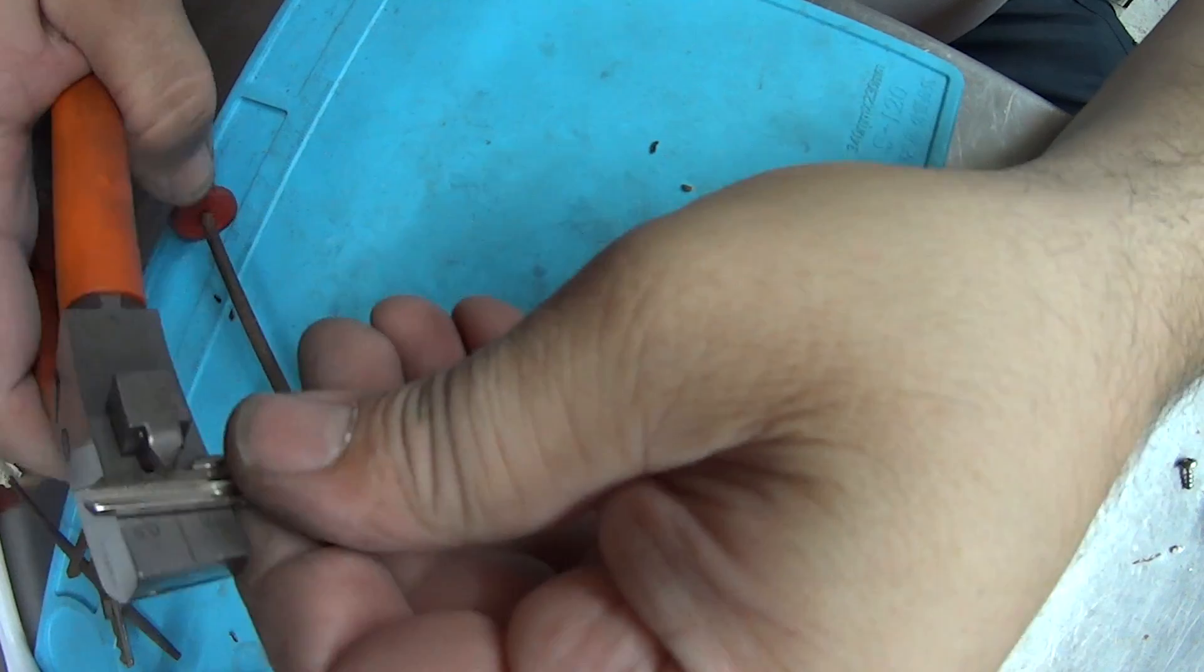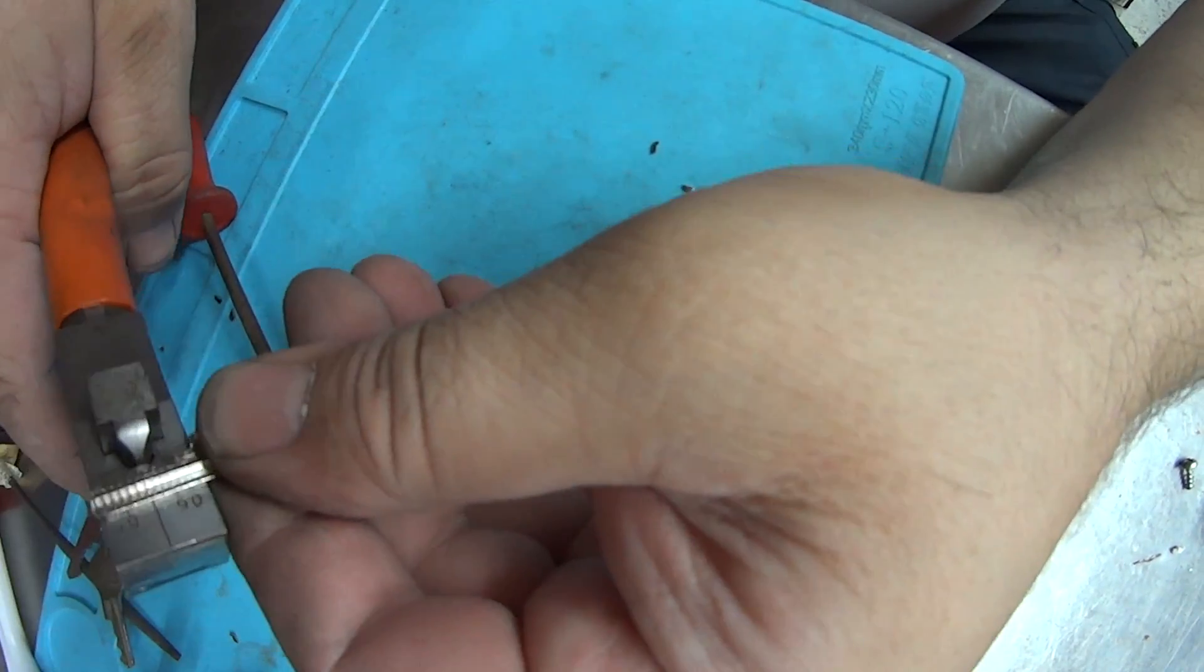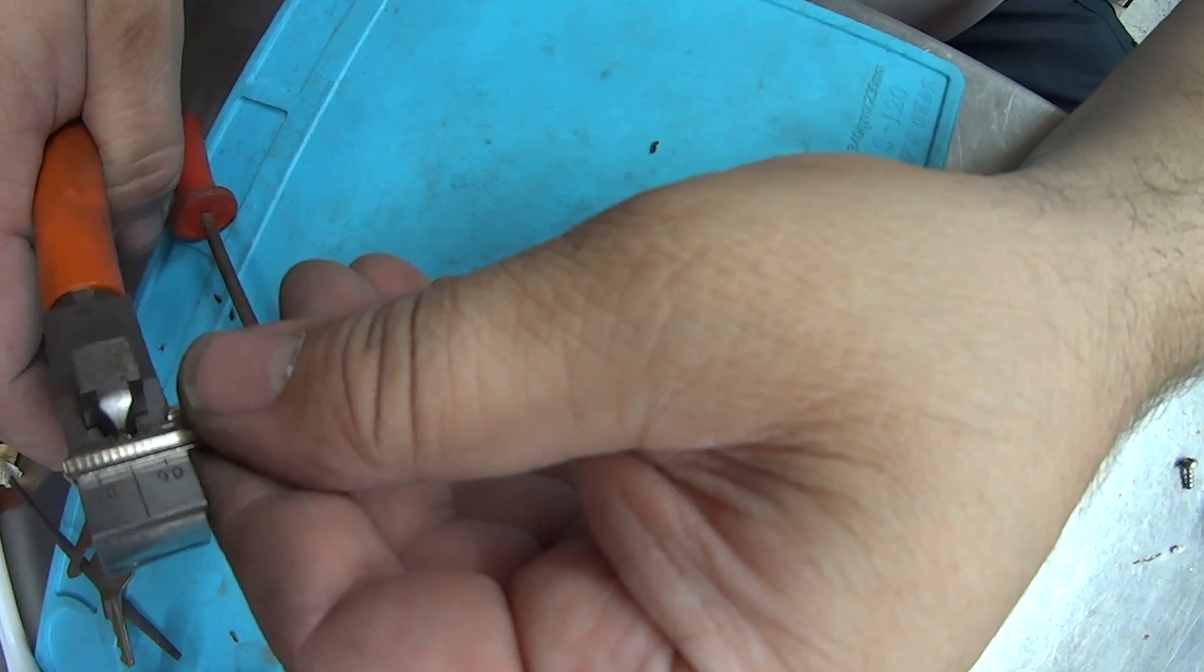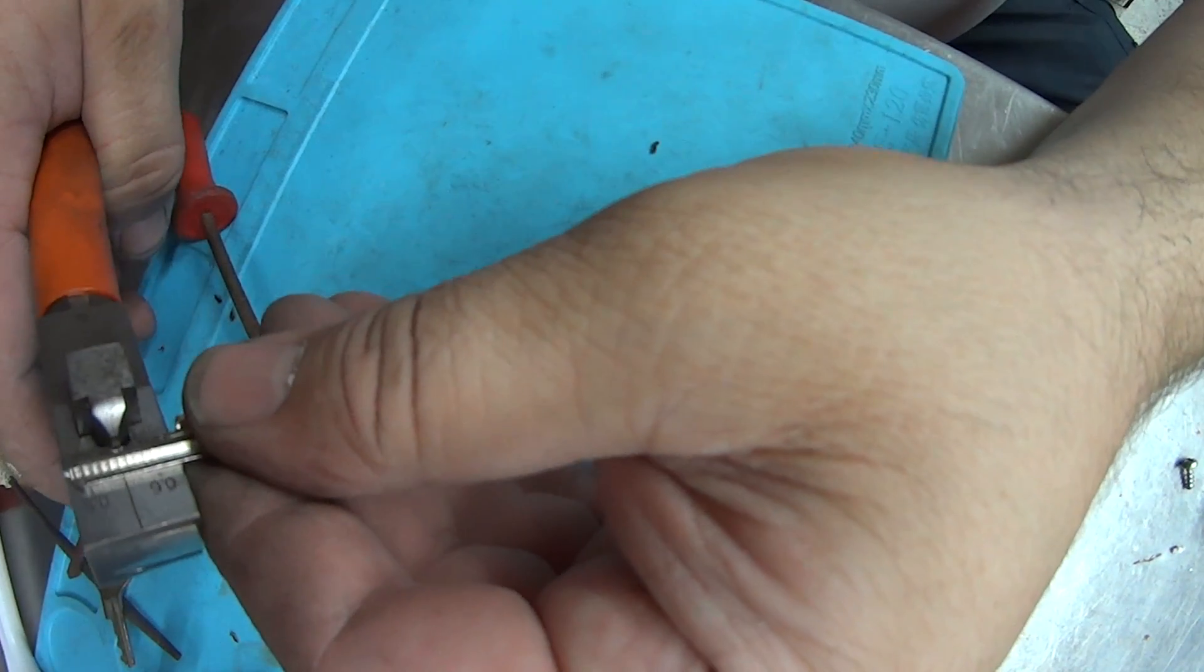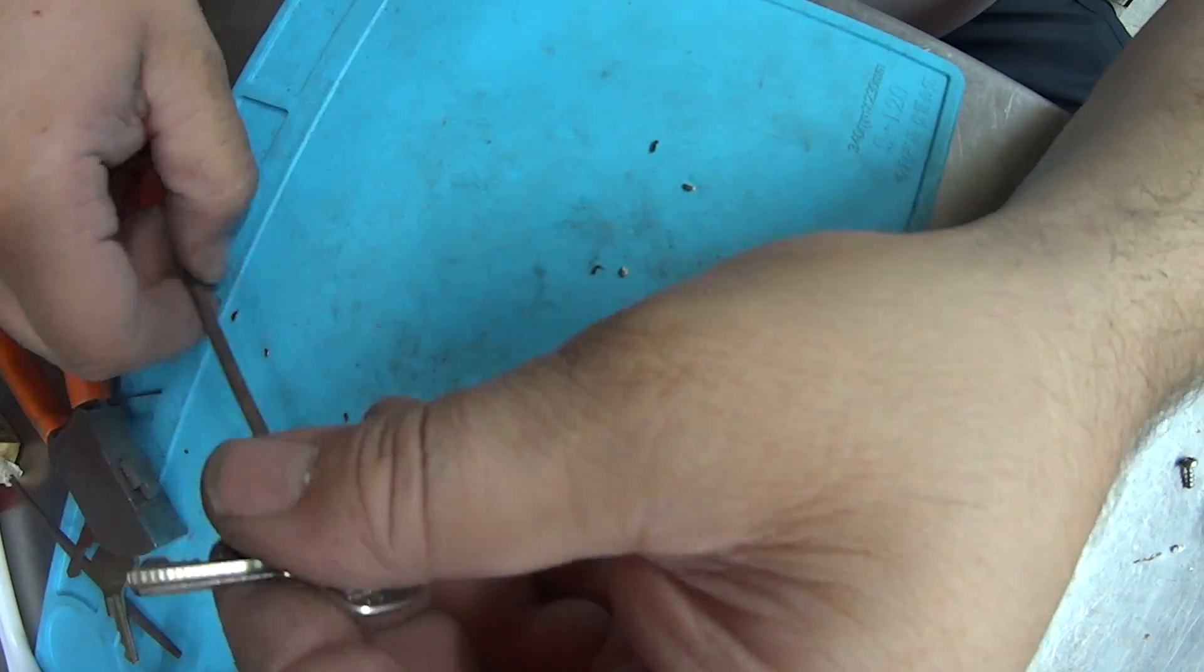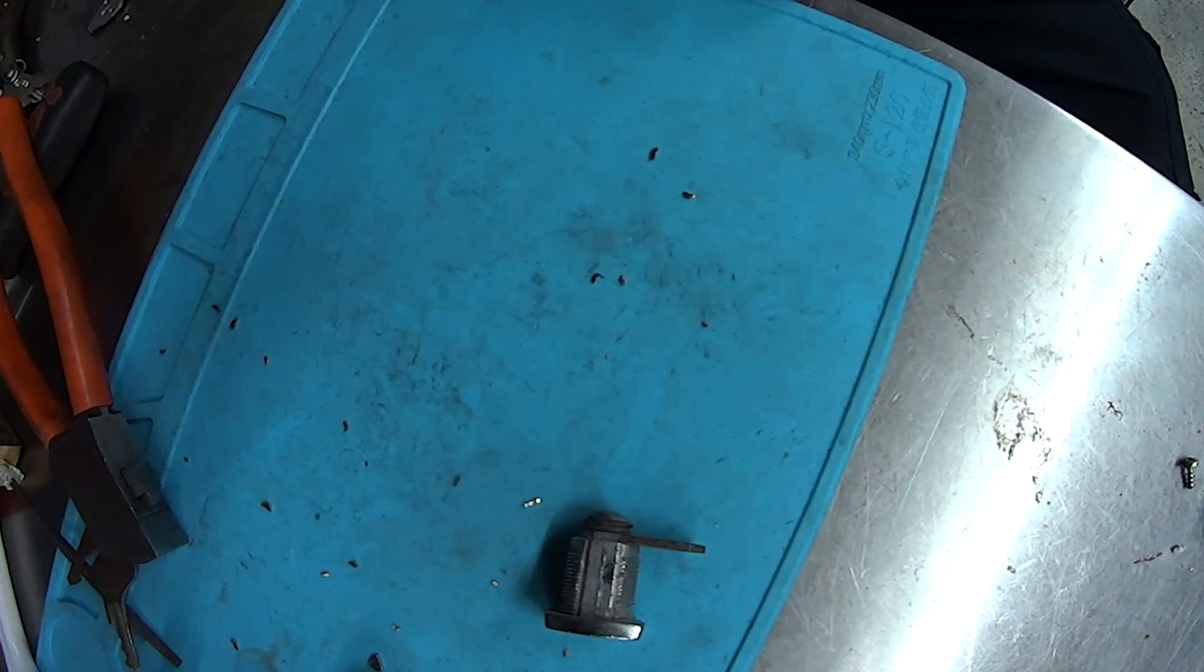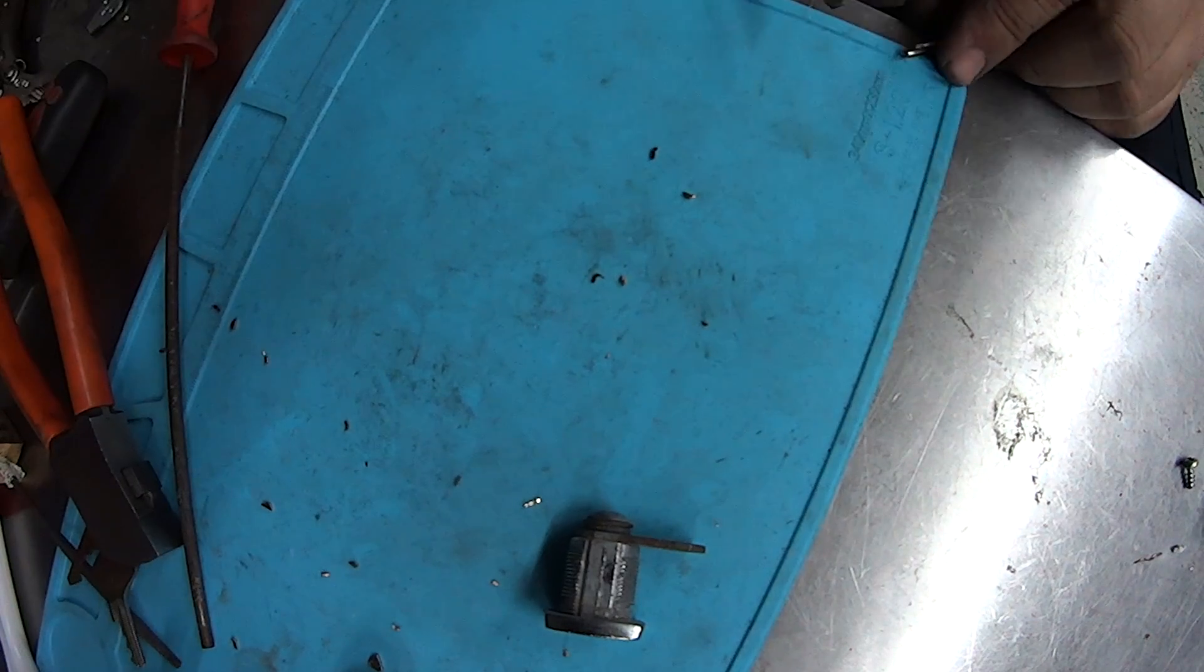So the first cuts are three. Second cuts are three. Third cuts are three. Now the last two are ones which are almost the key blank height.